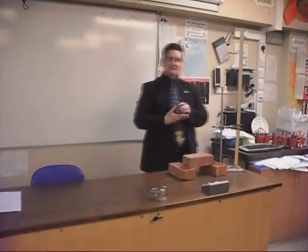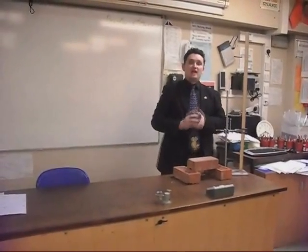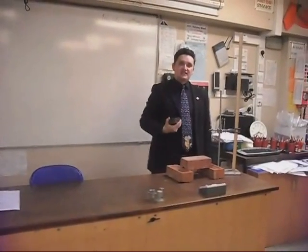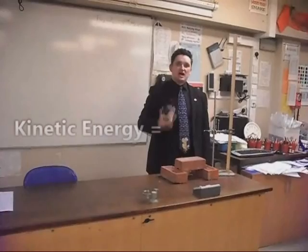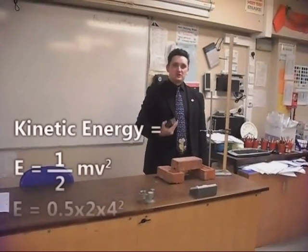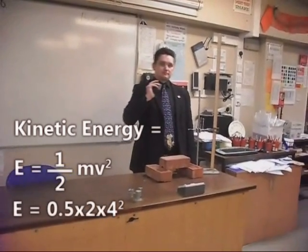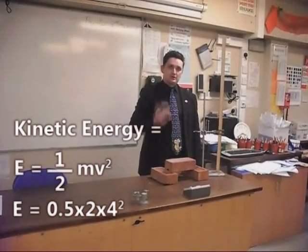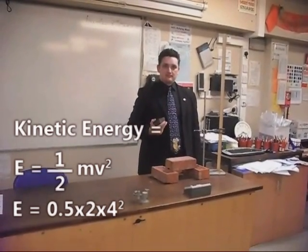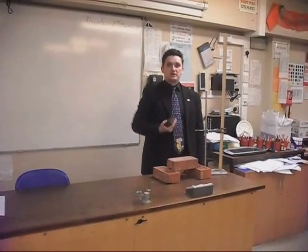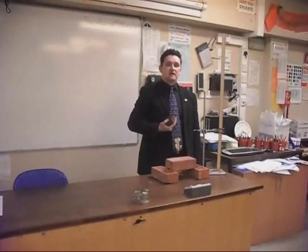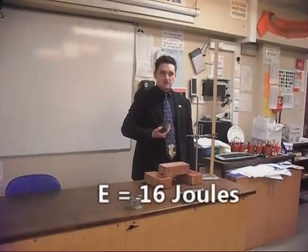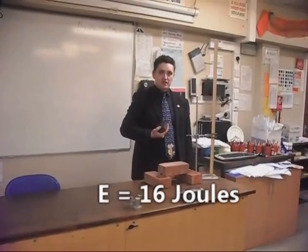Kinetic energy. If I let this 2 kilogram mass drop down, it will have a kinetic energy: E equals a half times M times V squared, which will be a half times 2 times 4 squared, because the speed will be about 4 meters a second. And that will end up as a half times 2 times 4 squared, which is 16 — so it ends up as 16 joules of energy.